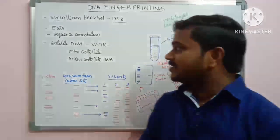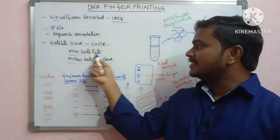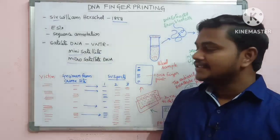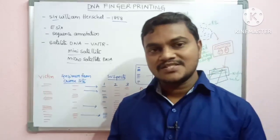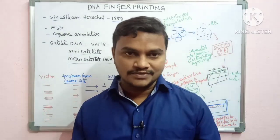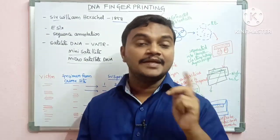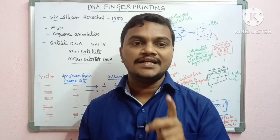Satellite DNA has two types: Micro Satellite DNA and Mini Satellite DNA. The sequences in these types are repetitive, and there is a general difference in the number of repetitive sequences between individuals.